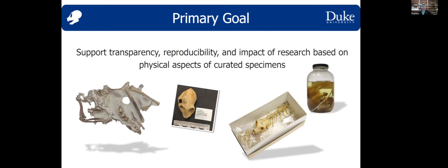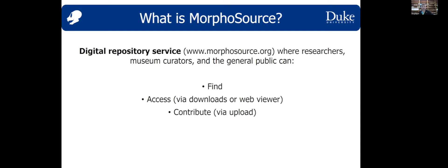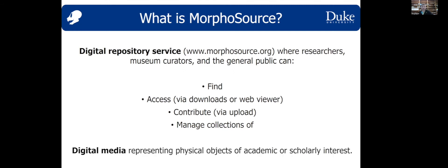The primary goal of Morphosaurus is to support transparency, reproducibility, and impact of research based on physical aspects of curated specimens — what you might imagine finding in a natural history museum. More specifically, it's a digital repository service where researchers, museum curators, and the general public can find access via downloads or a web viewer with measurement and annotation functions, contribute via uploads, and manage collections of digital media representing physical objects of academic or scholarly interest, primarily biological objects.